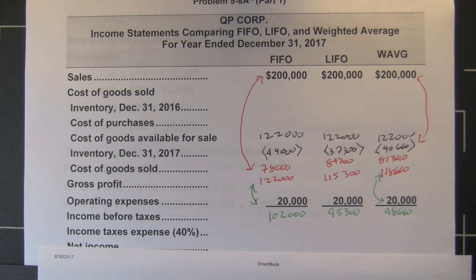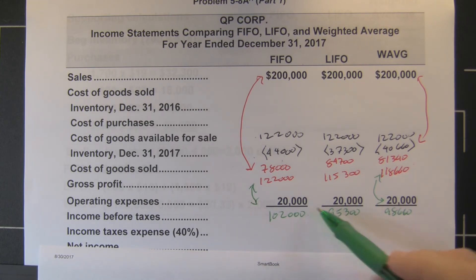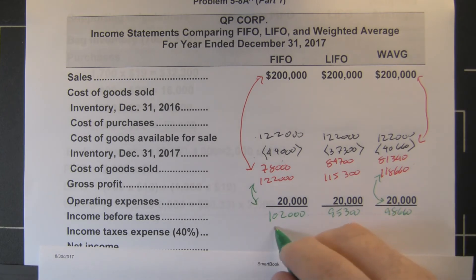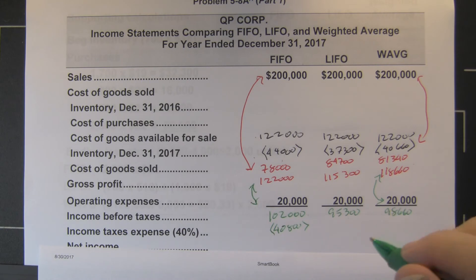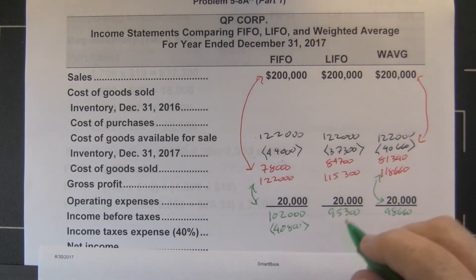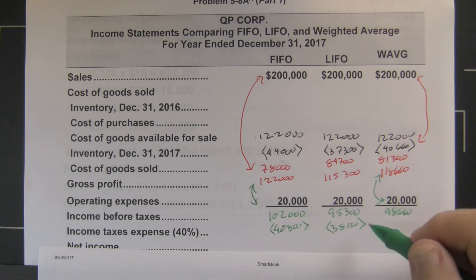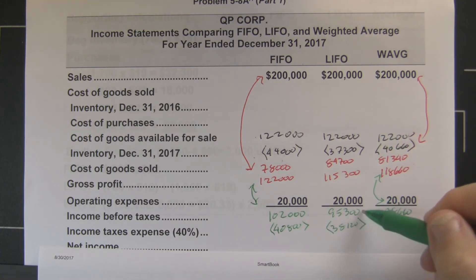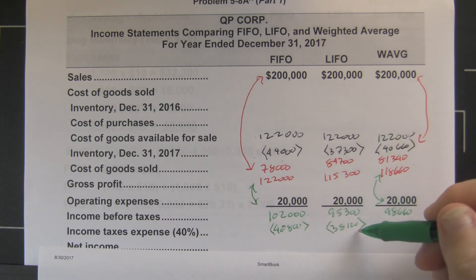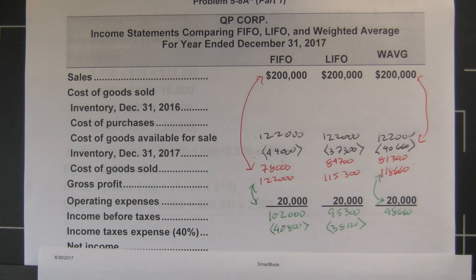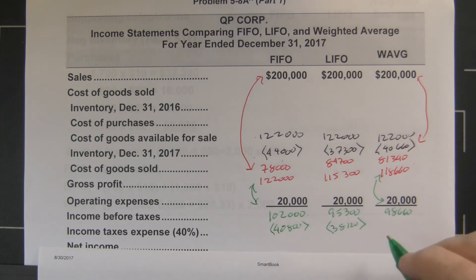Income tax is based on income, so 40% of each of these numbers is the tax. 40% of $102,000 is $40,800. 40% of $95,300 is $38,120. Notice that under LIFO you're paying less taxes — you're reporting less income and paying less taxes, but you're making the same amount of money. And 40% of $98,660 is $39,464.